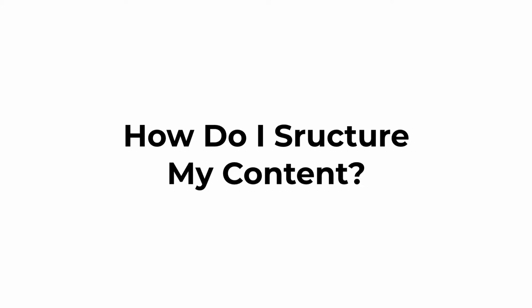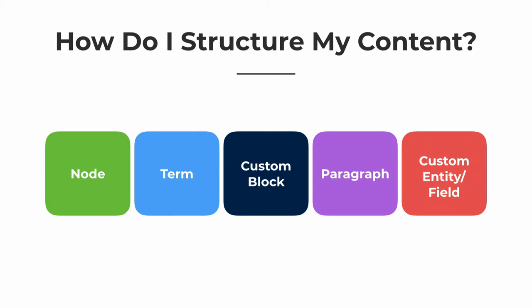In Drupal 8 there's not just one way to build out your content structure — you could probably find ten different methods of organizing things. The question usually comes about when you're hovering over the Structure tab in the admin toolbar. You can create content types, set up taxonomy terms, create custom blocks in your custom block library, and if you've added the Paragraphs module, you've got paragraph types as well.